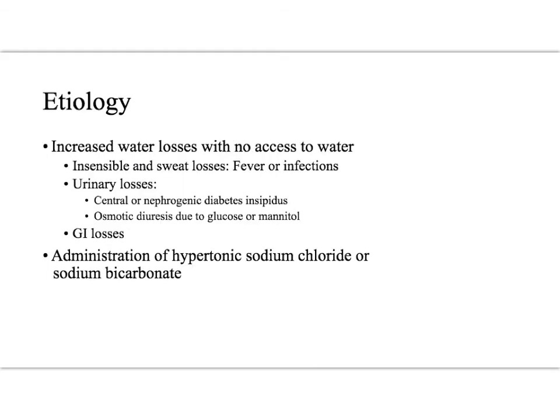There are basically two large etiologies for why someone would develop hypernatremia. The first is increased water losses with no access to free water. The second is administration of hypertonic saline or sodium bicarbonate. When it comes to increased water losses, there are two places you can lose free water: the GI tract and the kidneys as urinary losses. We can see urinary losses with diabetes insipidus — whether central or nephrogenic — and with osmotic diuresis, normally due to glucose but occasionally due to mannitol. We can also see increased water losses from insensible and sweat losses, which is prevalent when patients have fever or infections and their insensible losses are increased dramatically.